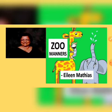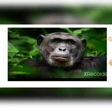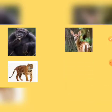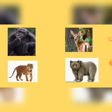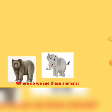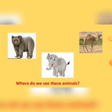Let's see some pictures. Which animal is this? Name the animal. Yes — chimpanzee! This is a chimpanzee. Tiger, deer, bear, elephant — where do we see these animals? Camel. Yes, in a zoo we see these animals.